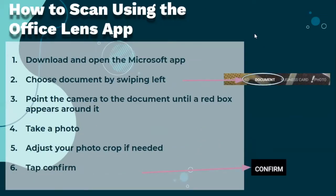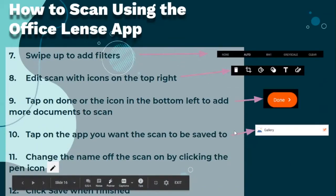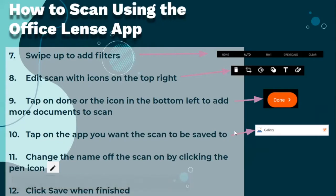How to scan using the Office Lens app. Download and open the Microsoft Office Lens app. Choose the document by swiping left. Point the camera at the document until a red box appears around it, then take a photo. Adjust your photo crop if needed, then tap to convert. Swipe up to add filters, and edit the scan with icons to the right. Tap Done or the icon to the bottom left to add more documents. Tap on the app you want the scan saved to, change the name by clicking the pen icon, then click Save.